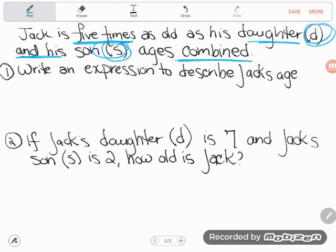As his daughter, call his daughter D, and his son, call his son S, combined. We could just add them, so we'll add D and S together. But Jack is not the age of his children combined, he's five times the age of his children combined. Again, you need parentheses to say combine first and multiply afterwards. So this is five times all of that, and that right there is an expression that describes Jack's age.